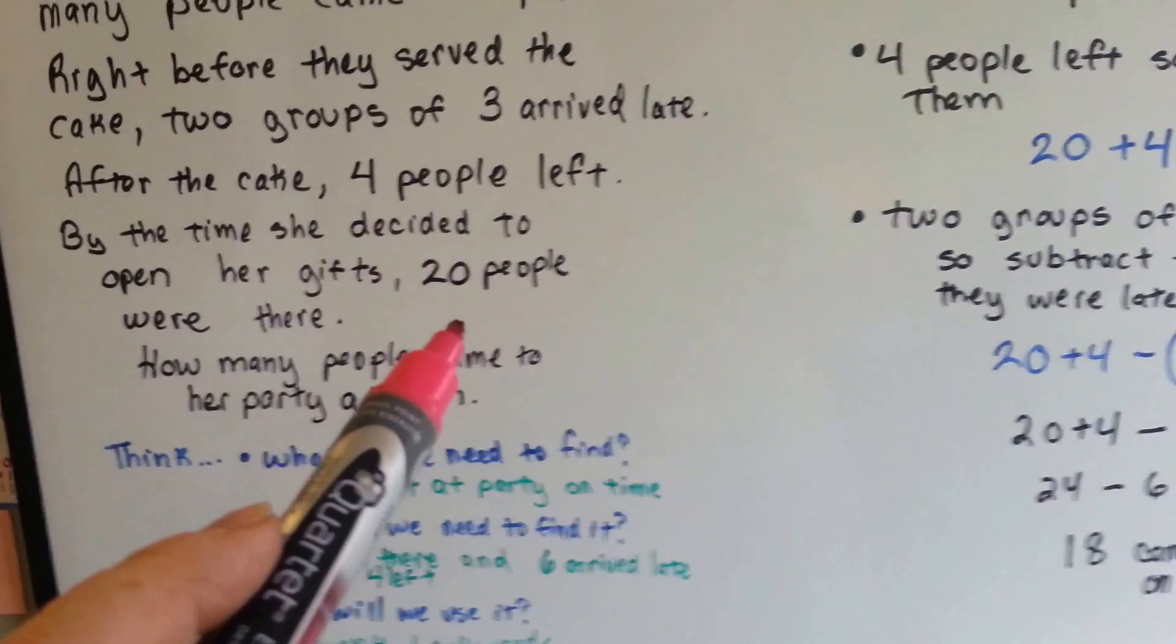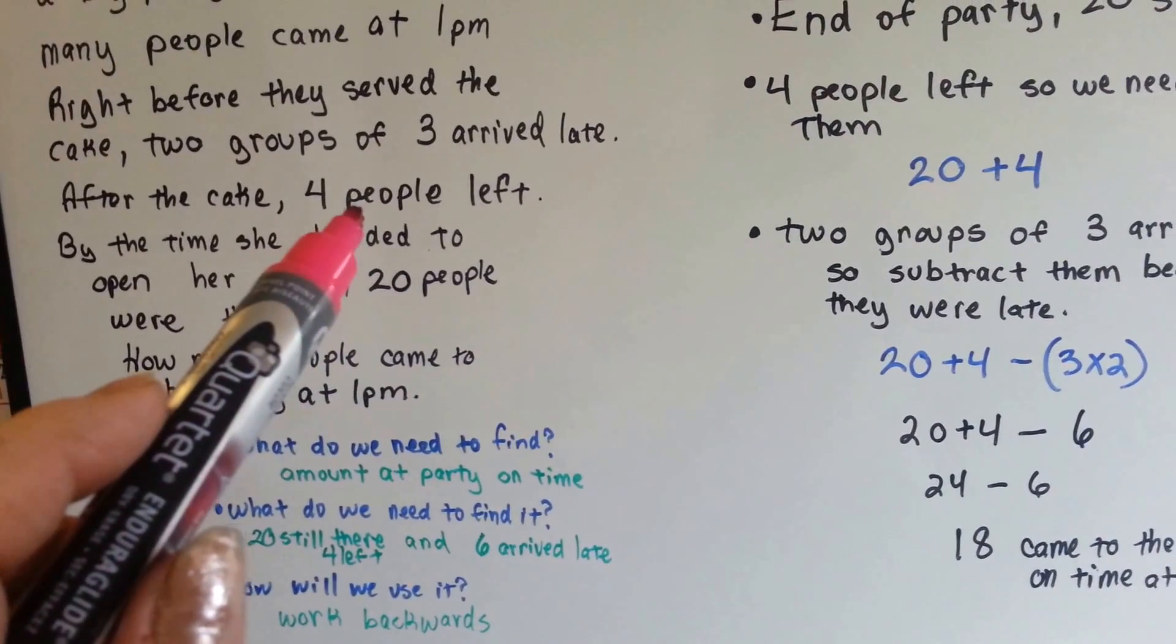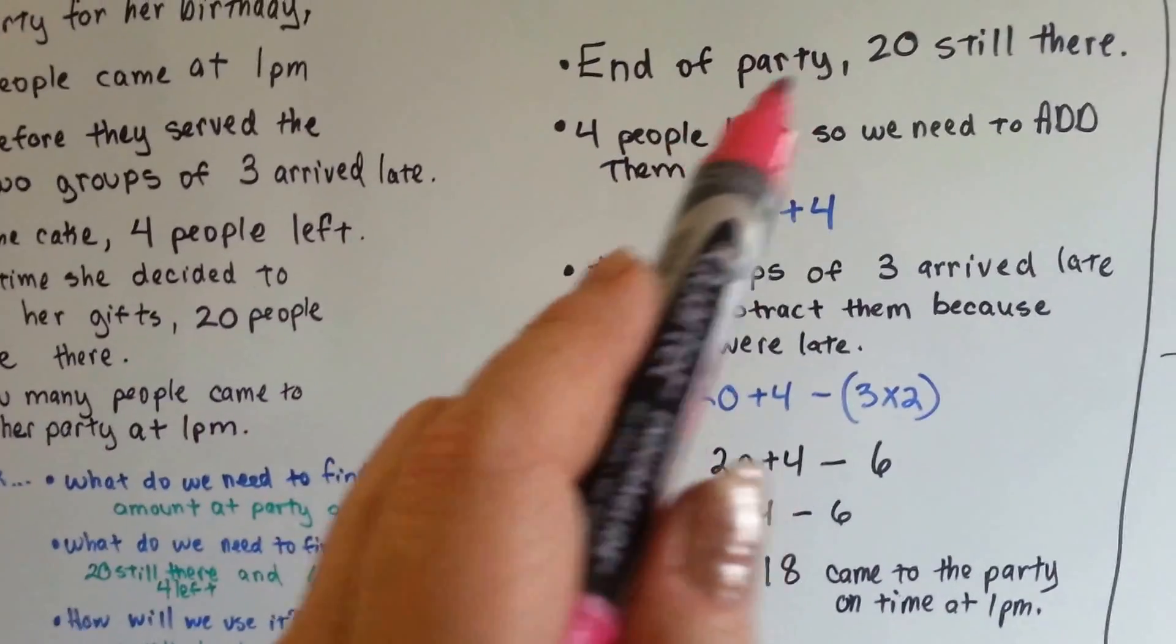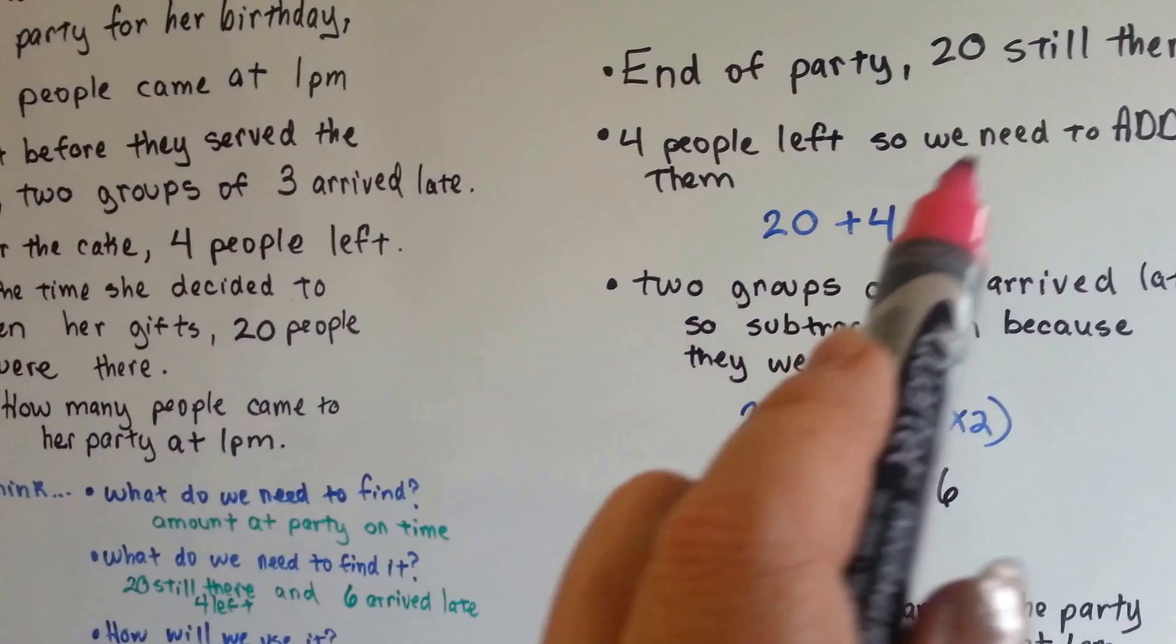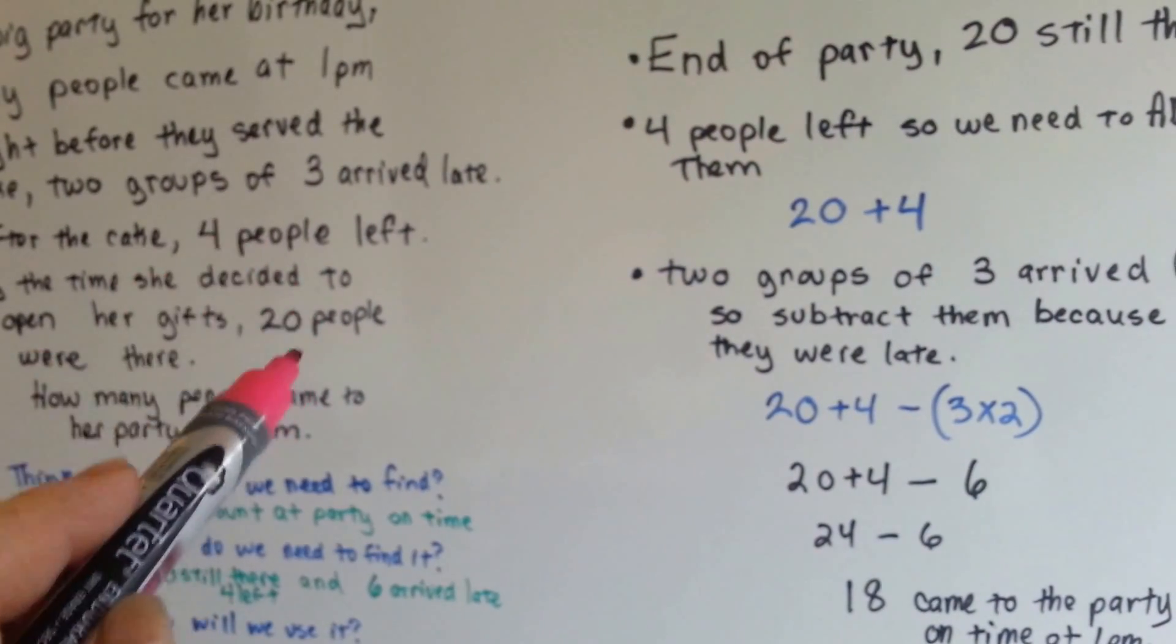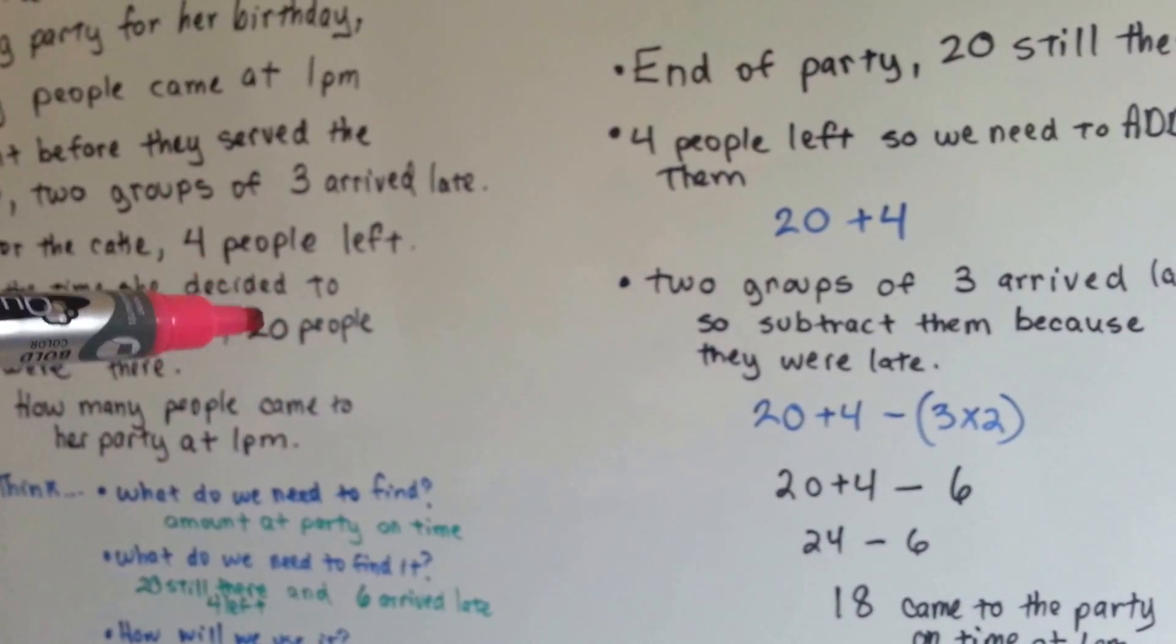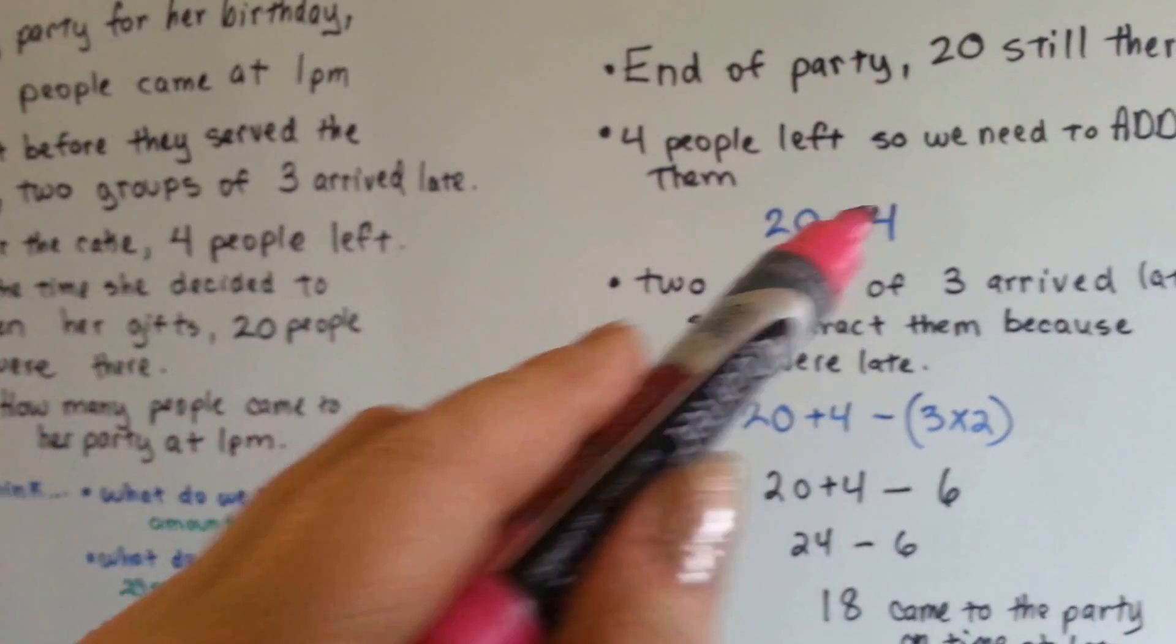So there were 20 people at the end of the party, four people left right before that. So, because four people left, we need to add that four on to the 24. Because they were there, and then they left, and then there were 20. So that means 20 plus four.